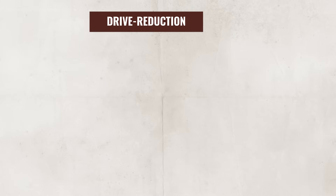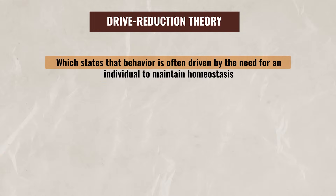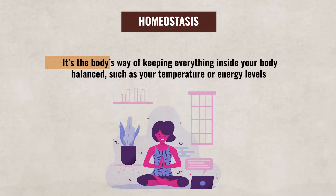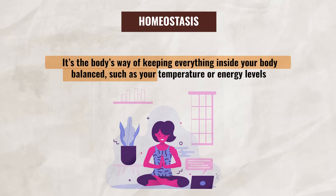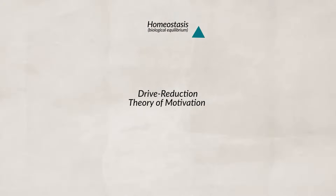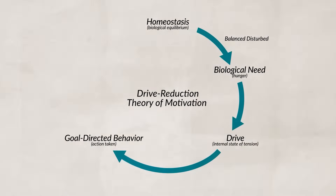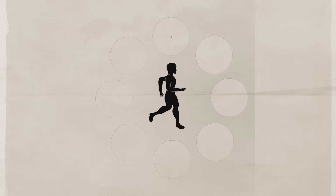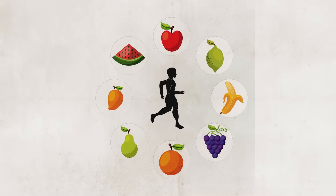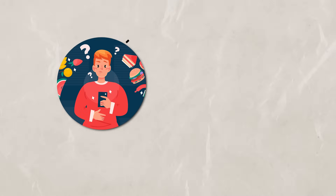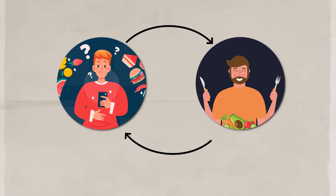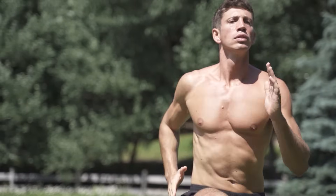When trying to understand why people do what they do, we can look at a variety of different theories on motivation, such as the drive reduction theory, which states that behavior is often driven by the need for an individual to maintain homeostasis. Homeostasis is the body's way of keeping everything inside your body balanced, such as your temperature or energy levels. For example, say an individual does not have enough calories, creating an imbalance in their body. This imbalance triggers the individual to feel hungry, which then motivates them to eat, ultimately restoring their body back to homeostasis. The motivation here was to try and get the body back to a balanced state.